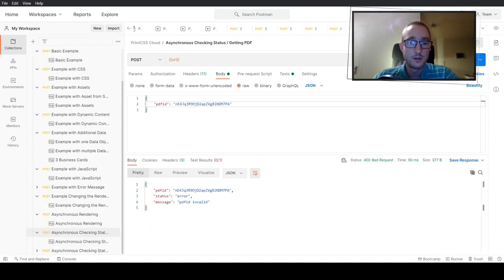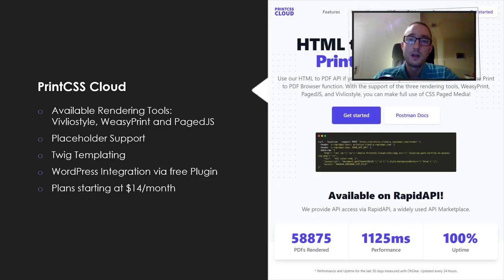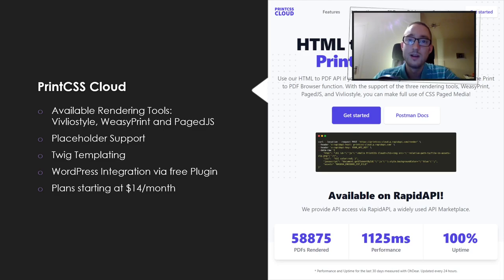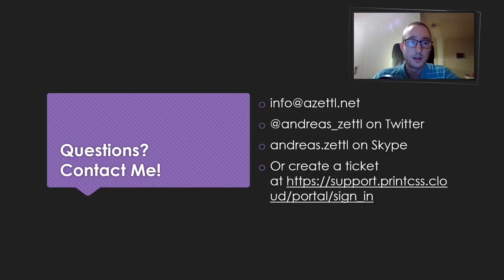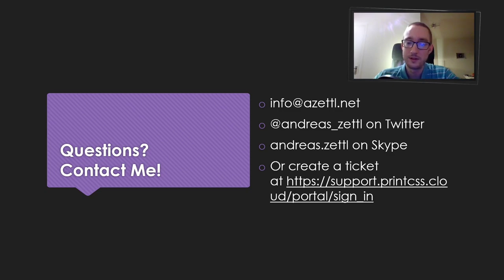So you saw the API — it starts at $14 a month and is a great way to use WeasyPrint, weasyprint, and PageJS with placeholder support, templating, and without any hassle of setting up these tools yourself. You can actually try the API already by using the Print CSS Playground at printcss.live, because everything you render with those three tools there runs via this API. If you have further questions about the API or the playground, you can contact me via email, on Twitter, Skype, or by creating a ticket on the printcss.cloud portal.